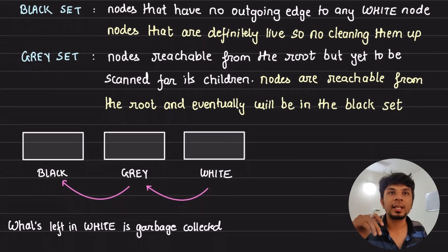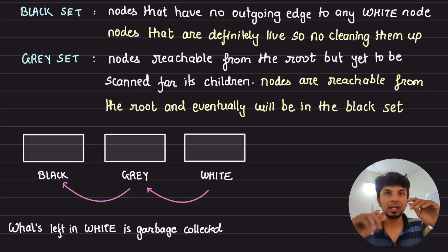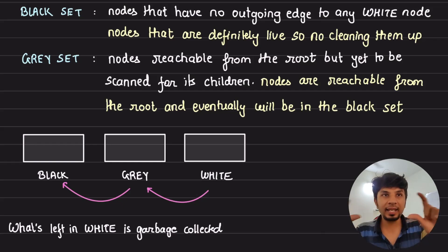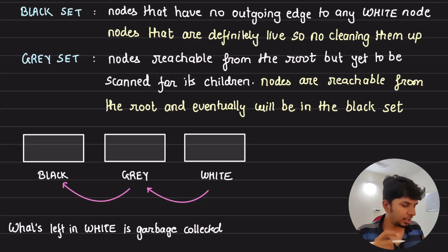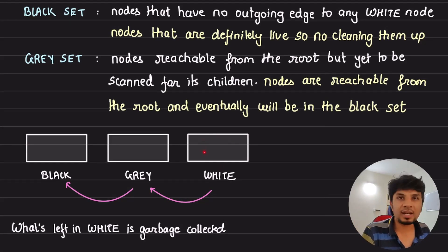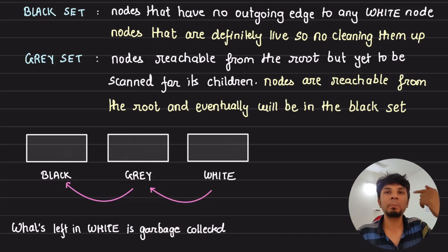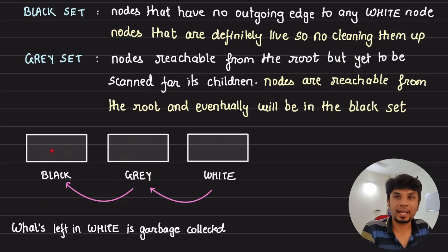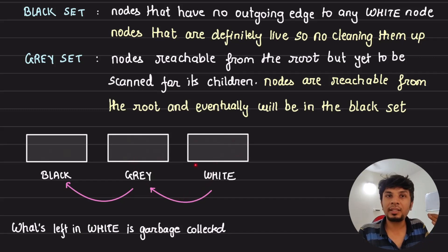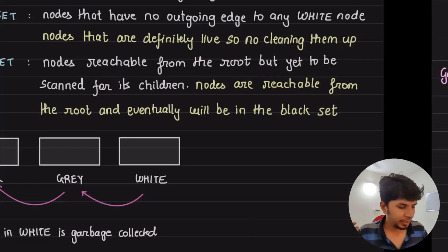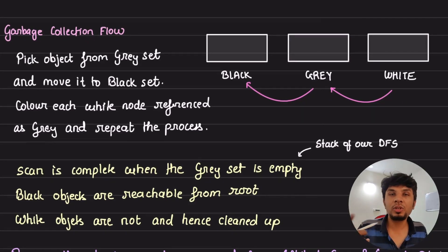The black set contains nodes that have no outgoing edge to white nodes — these are definitely live objects that should not be garbage collected. The gray set contains nodes reachable from the root that are children of some black node but not yet completely processed — sitting between black and white. Every node transitions from white to gray and from gray to black. Gray nodes are definitely live but not yet fully processed, so eventually every gray node turns black. We stop iteration when the gray set is empty; whatever remains in the white set can be freed.